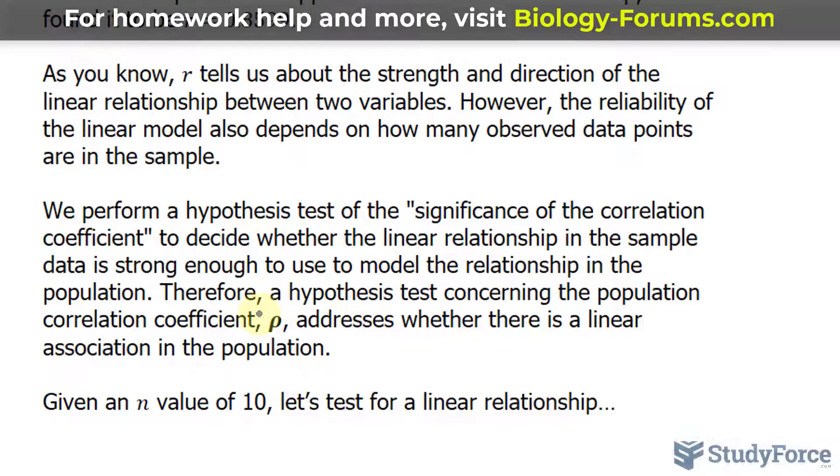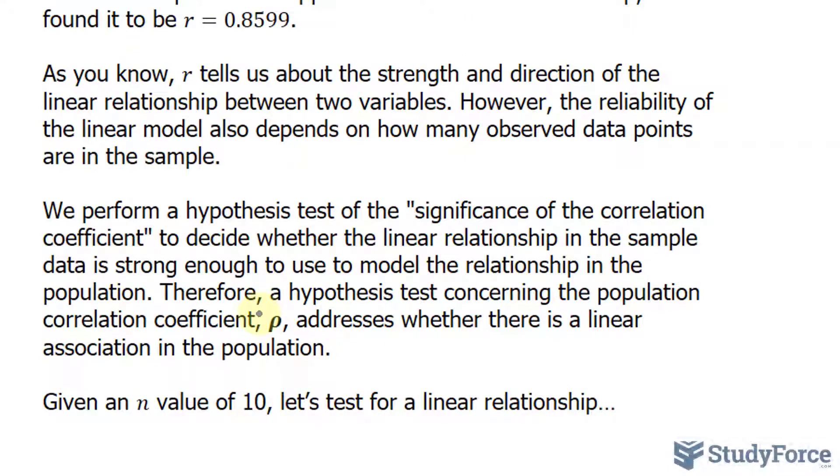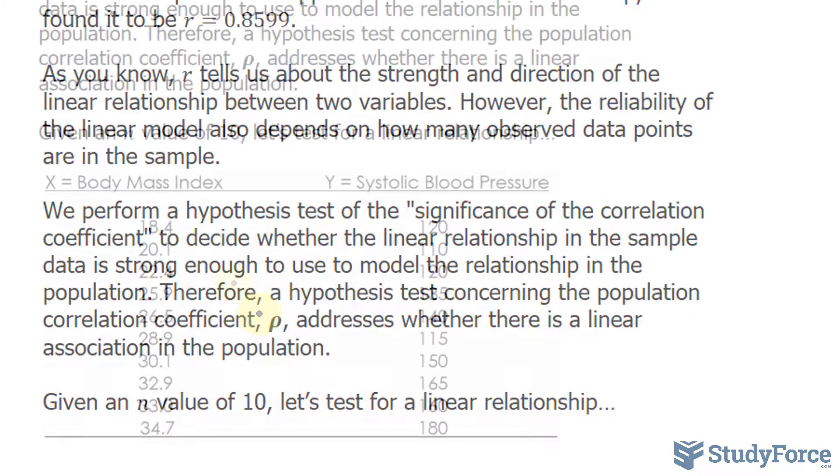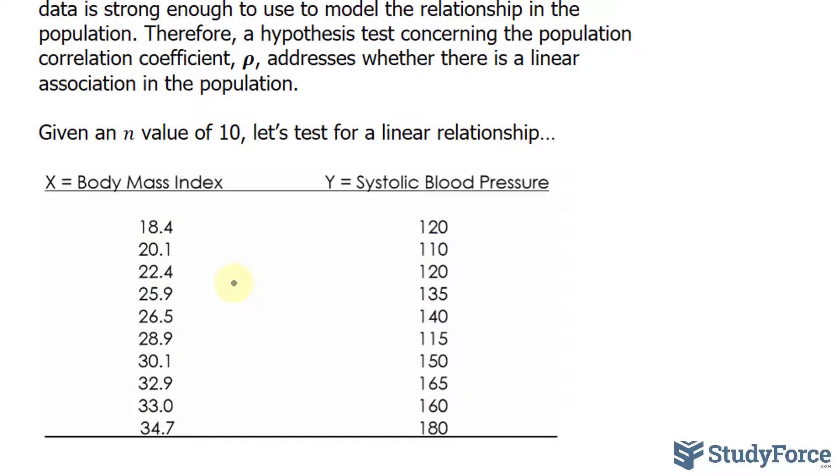So given an N value of 10, let's test for a linear relationship given an R value of 0.8599. On your screen now is the hypothetical data we used to obtain that R value, and N represents the number of observations. So here's how we conduct the test. We begin with our hypotheses.